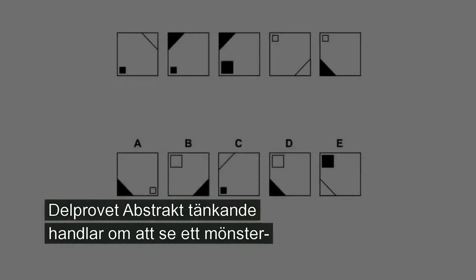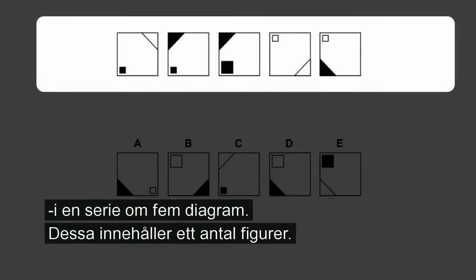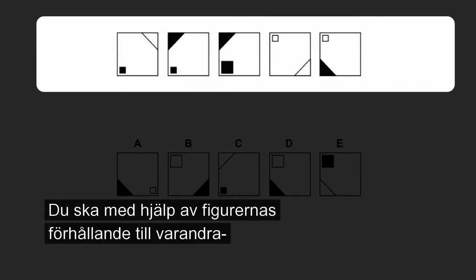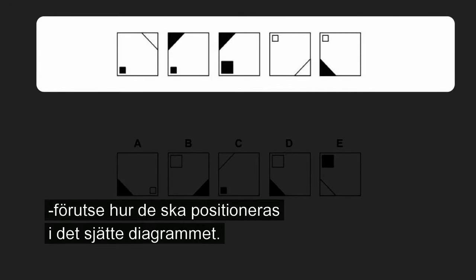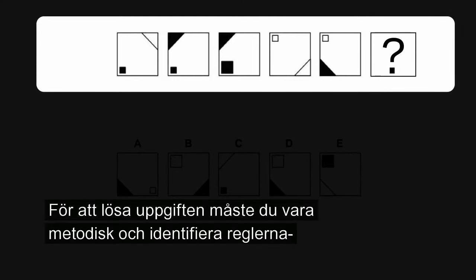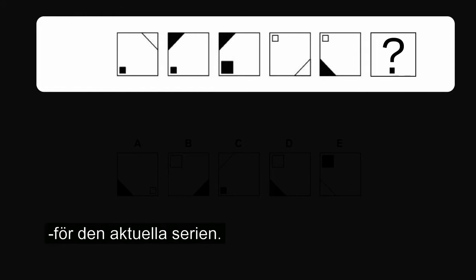I delprovet Abstract Tänkande handlar det om att se ett mönster i en serie om fem diagram. Varje diagram innehåller ett antal figurer, och du ska med hjälp av de olika figurernas förhållande till varandra förutse hur de kommer att vara positionerade i det efterföljande sjätte diagrammet.